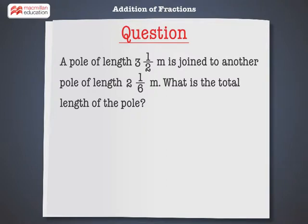A pole of length 3 and 1 by 2 meters is joined to another pole of length 2 and 1 by 6 meters. What is the total length of the pole?